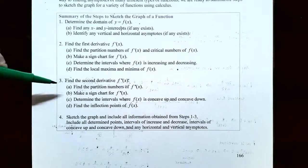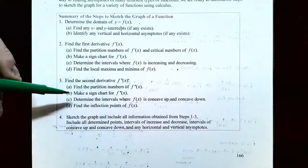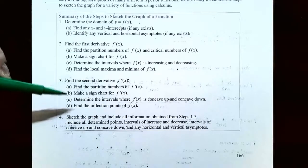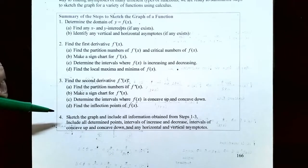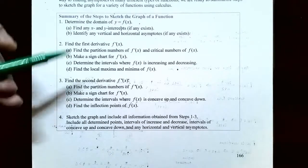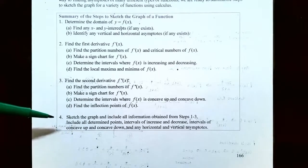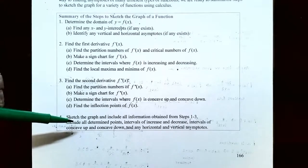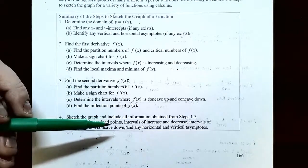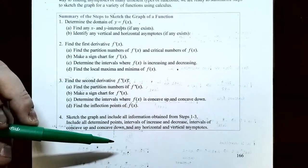Step three: calculate the second derivative f''(x). We find partition numbers for f''(x), construct a sign chart, and determine the intervals where f(x) is concave up or concave down. The points where the function changes from concave up to concave down, or vice versa, are called inflection points. Step four: sketch the graph including all information from steps one through three — determined points, intervals of increase/decrease, concavity, and any horizontal or vertical asymptotes.